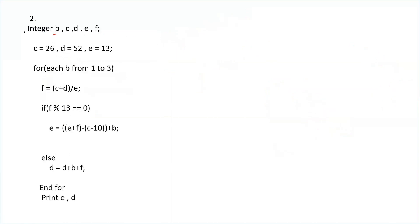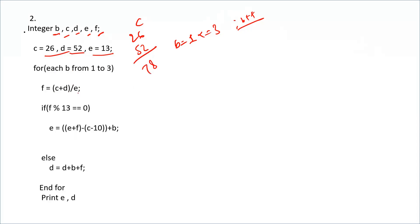Let's move to the next question. We have integer values b, c, d, e, f. c is initialized to 26, d to 52, e to 13. In the for loop, b runs from 1 to 3 (less than or equal to 3). Inside the loop, f is set to c plus d divided by e: 26 plus 52 is 78, divided by 13 gives 6, so f equals 6.